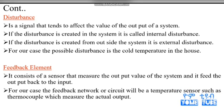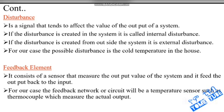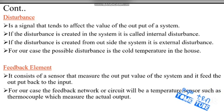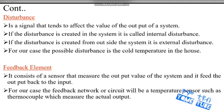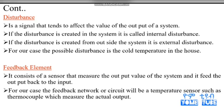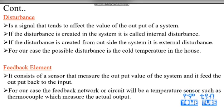It consists of a sensor that measures the output value of the system and it feeds the output back to the input. In the detector, the input sets the controller and the output measures the sensor — it is a very specific circuit. If you have a physical value, you can see the output of the system. For our case, the feedback network or circuit will be a temperature sensor such as a thermocouple that measures the actual output.